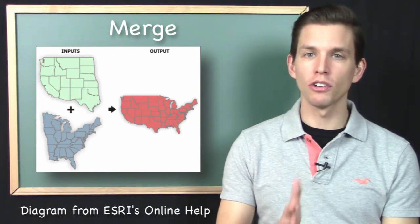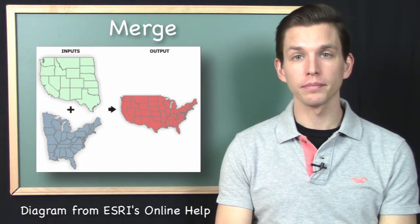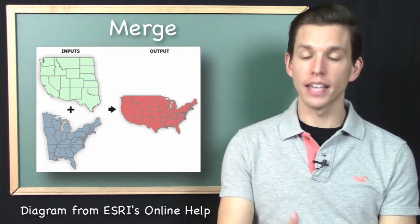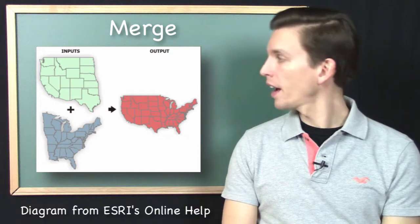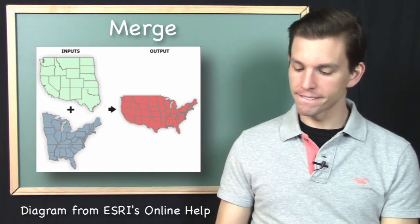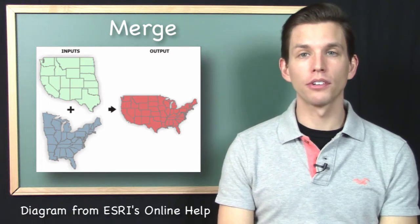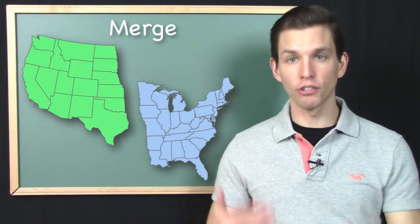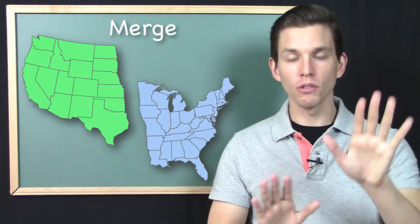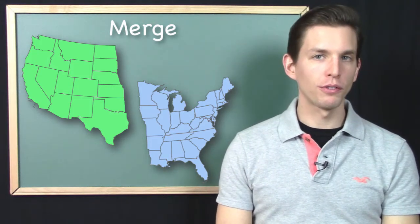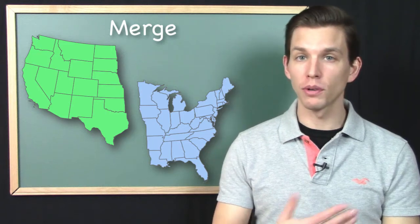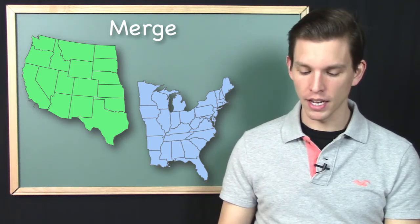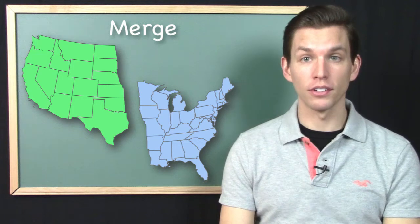It's quite the contrary — the geographic positions of the features in the input files are going to remain exactly as they are in the output data file. So if I have data files of the Eastern and Western United States and they are out of their correct geographic position, skewed in some way, I can't use the Merge tool to fix that. I can use it to combine those two into the same data file, but they are not going to move as the result of the merge operation.